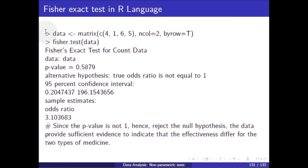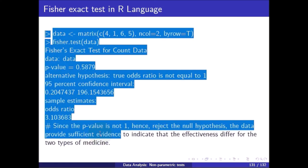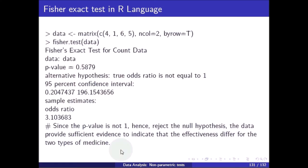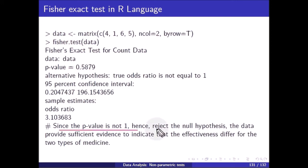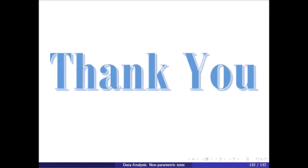In the R implementation, the p-value is 0.5879, which is not 1. Hence we reject the null hypothesis. The data provides sufficient evidence to indicate that the effectiveness differs for the two types of medicine. That is the end of this video, thank you very much.